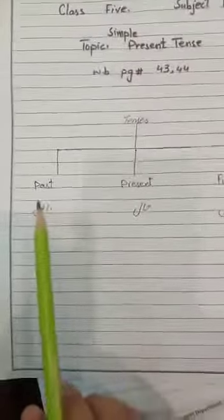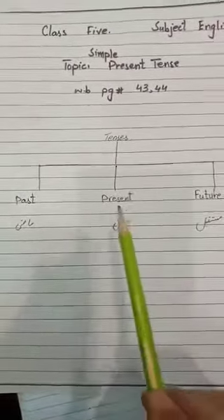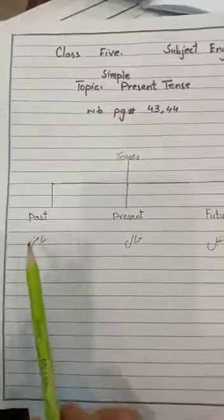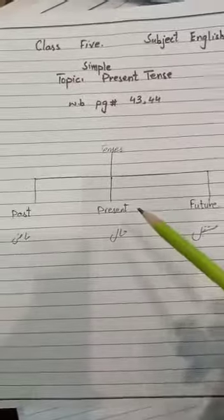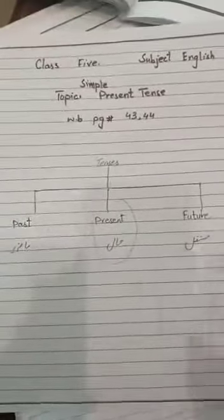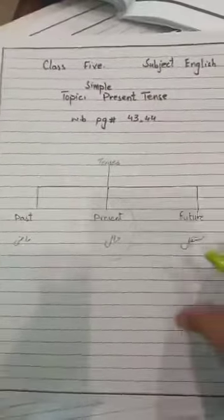There are three tenses: past, present, and future. Past is for past time, present is for current time, future is for future time. We have already studied past in previous lectures. Today we will learn about present, specifically Simple Present. After this, we will learn Present Continuous, but today's topic is Simple Present Tense.